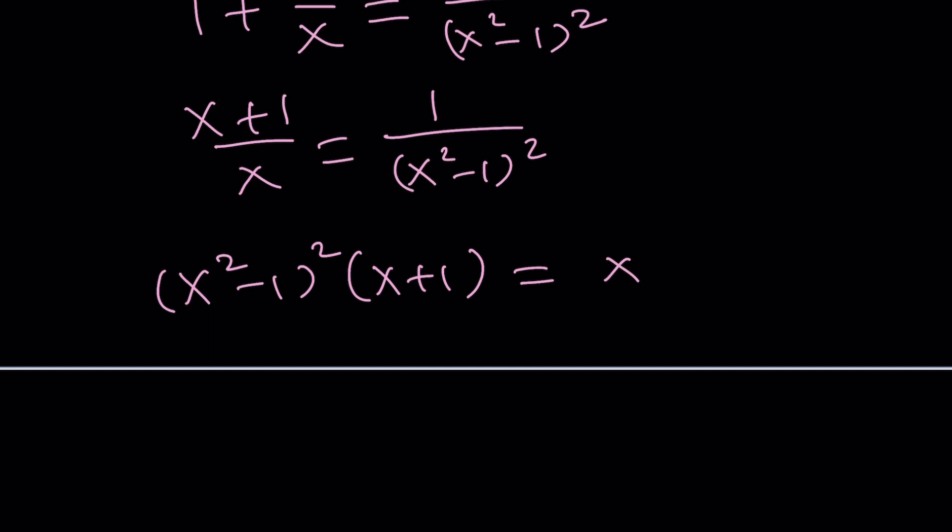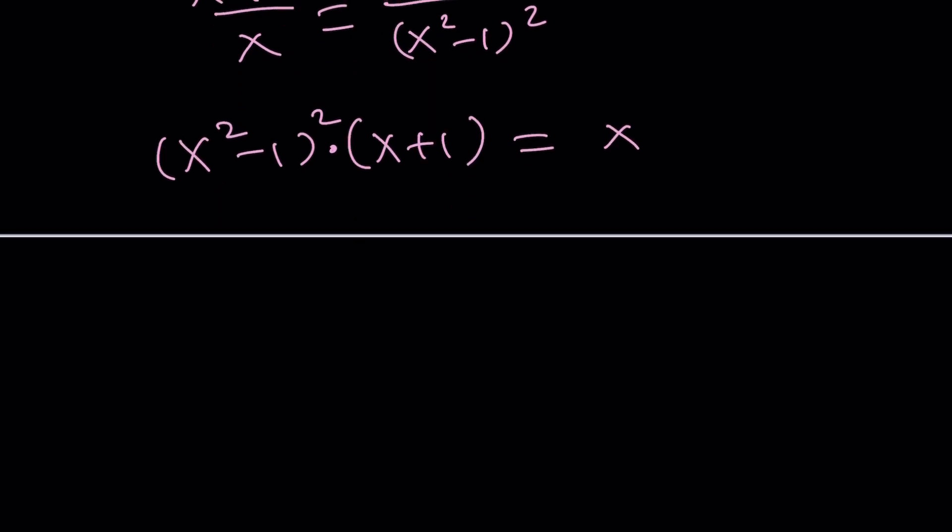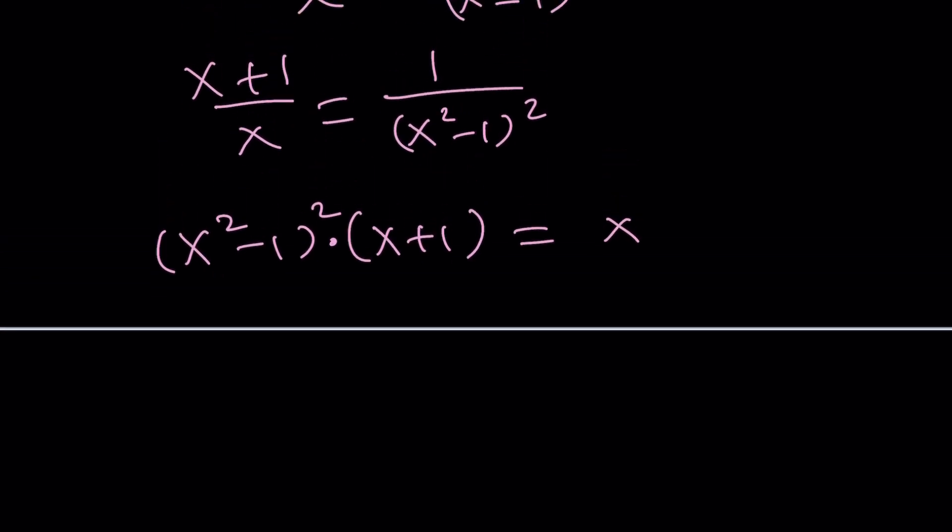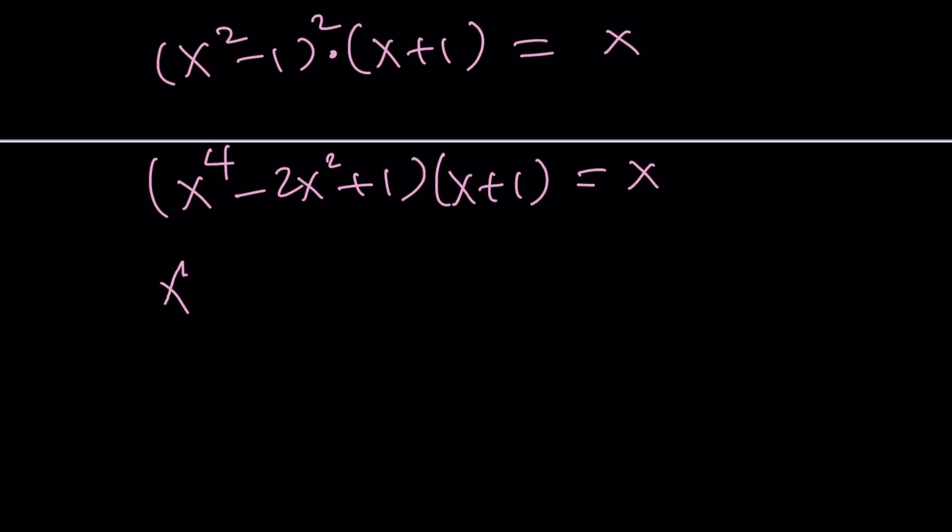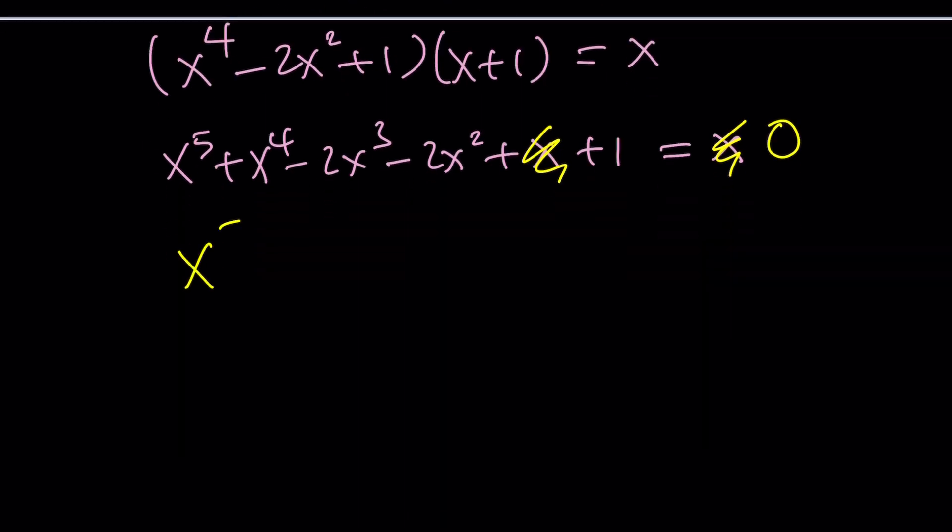So we're going to multiply this by that, and it'll equal x. Can we really make this factorable or something? Can we find a common factor? Probably not. At least I don't see right away, but this will give me a quintic. Quintics are not good. x to the fourth minus 2x squared plus one multiply by x plus one equals x, and then we're going to go ahead and distribute x to the fifth plus x to the fourth minus 2x cubed minus 2x squared plus x plus one equals x. X is going to cancel out. We're going to end up with zero, but we still have a constant, so let's rewrite this equation. x to the fifth plus x to the fourth minus 2x cubed minus 2x squared plus one equals zero.